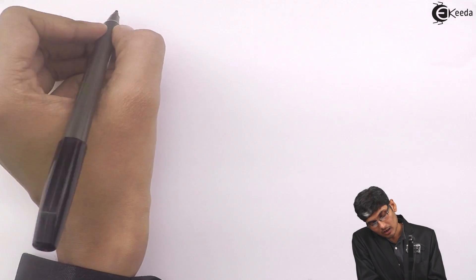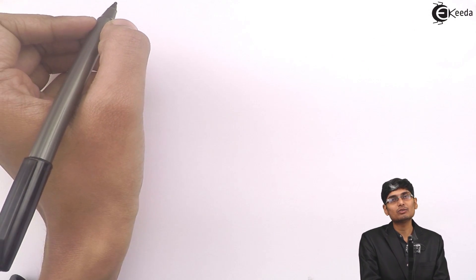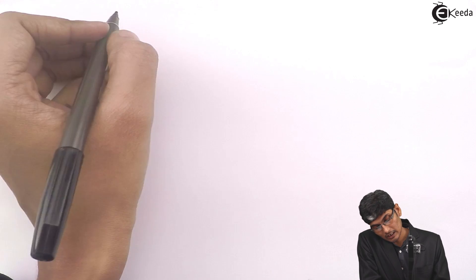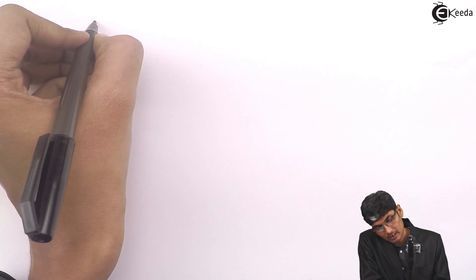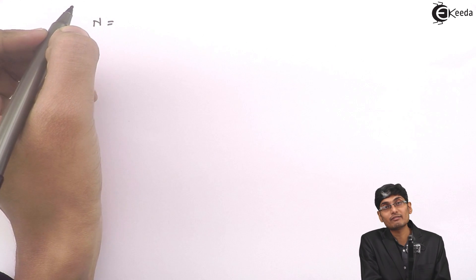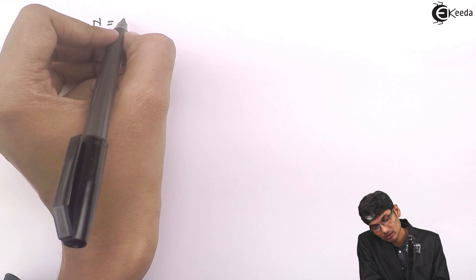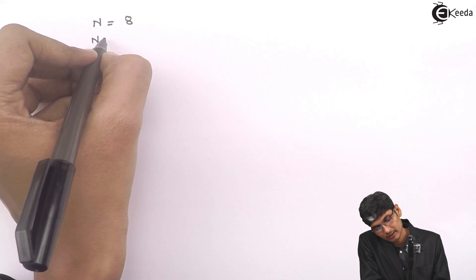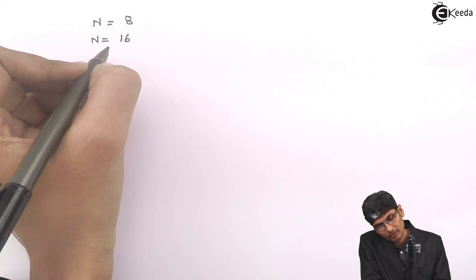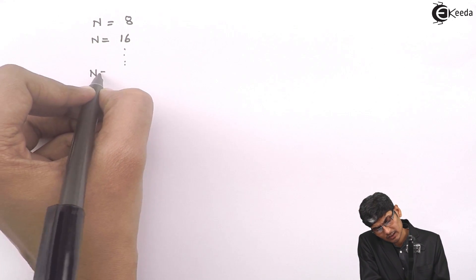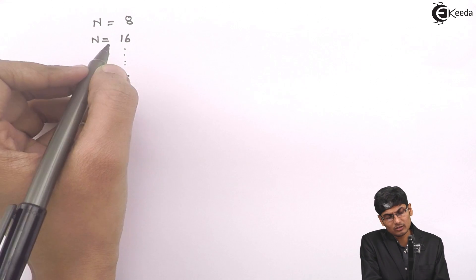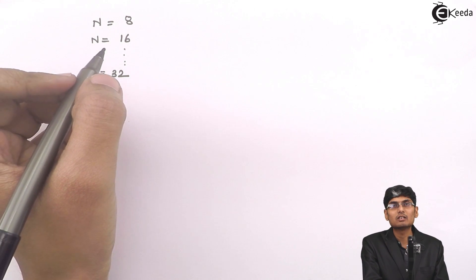Hi friends, let us see today what do you mean by a composite radix FFT and why it is used. Let us first see why it is used. Suppose if we have n equal to 8, or n equal to 16, or 32 and so on — which means it can always be split in base 2.